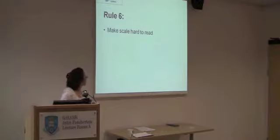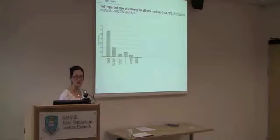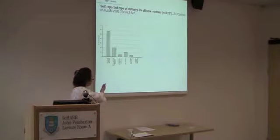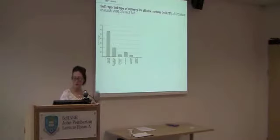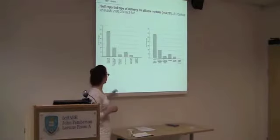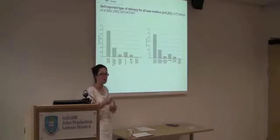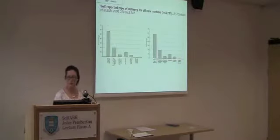Rule number six: make the scale hard to read. This is a fascinating example — self-reported time of delivery for all new mothers, data from a study published in the BMJ in 2002. You can still read the scale, but it's not as clear. If you just reorient it — turn it round — it becomes clearer. These are little tricks, but if you have to start turning your head, it's another barrier to understanding what's going on.